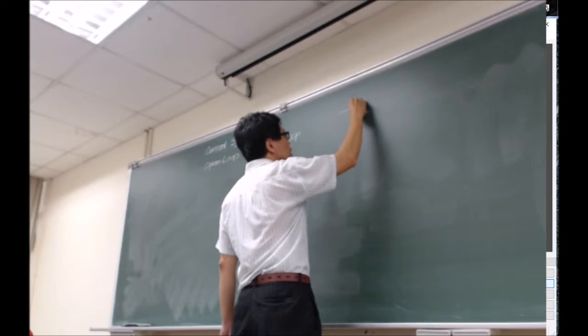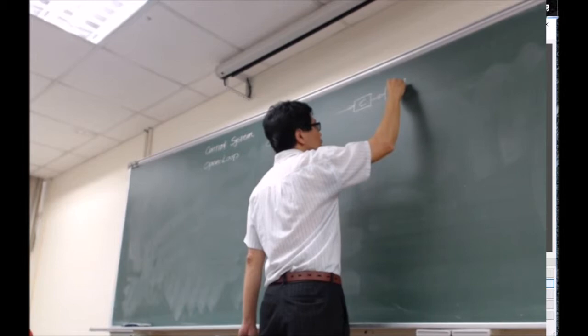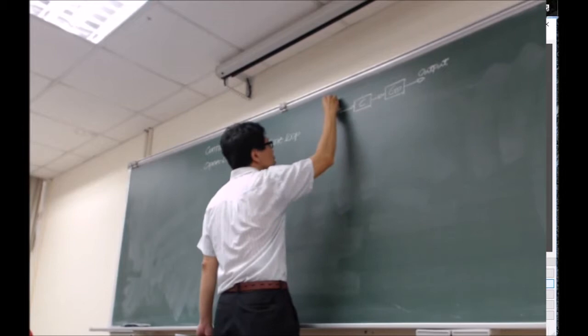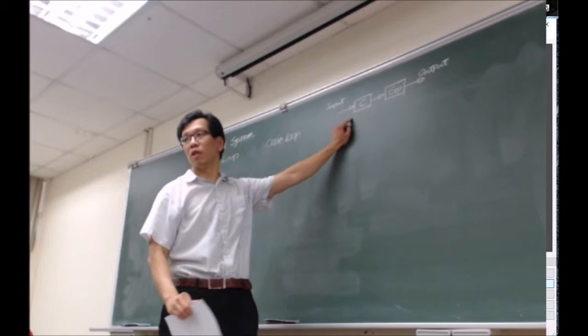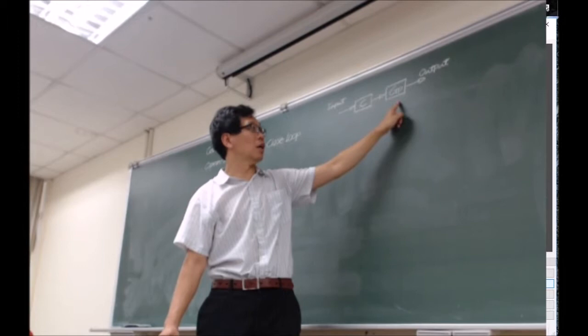For open loop, I have my controller, my plant, and this is my output. The controller cannot sense anything from the output because after it generates a control command, it goes to the plant directly. The plant is going to react based on how much input you provide.